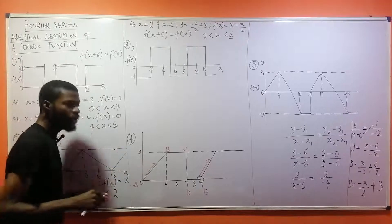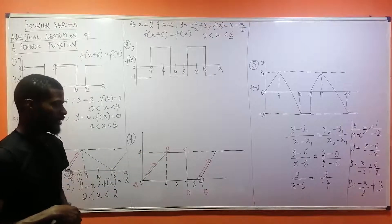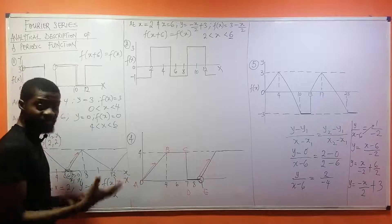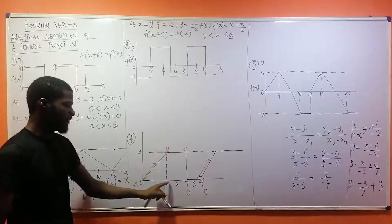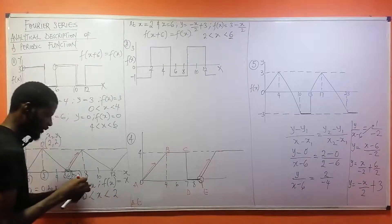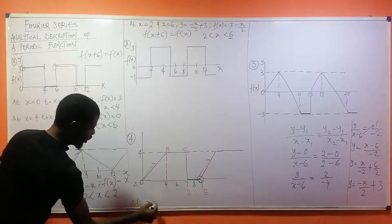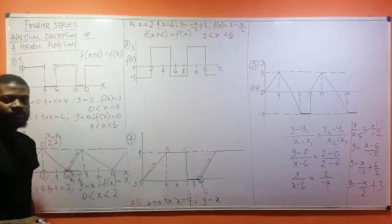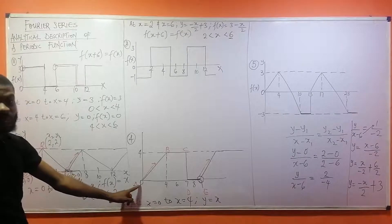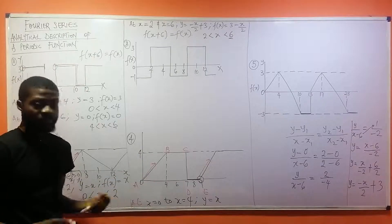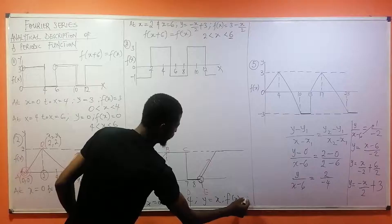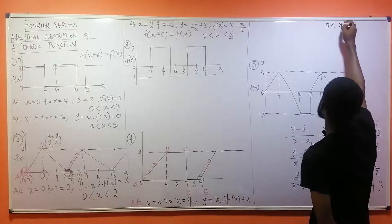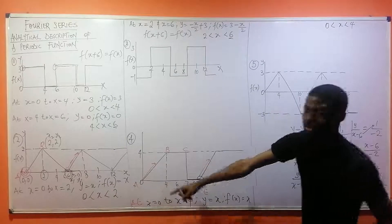For A to B: at A, x = 0 and y = 0; at B, x = 4 and y = 4. The values are equal, so y = x. Therefore f(x) = x, and this occurred at 0 < x < 4.